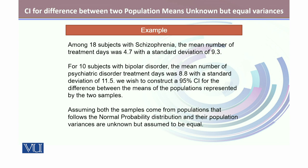They had two groups. The first group had 18 subjects with schizophrenia, and the mean number of treatment days was 4.7 with a standard deviation of 9.3. For the second group, they had 10 subjects with bipolar disorder, and the mean number of psychiatric disorder treatment days was 8.8 with a standard deviation of 11.5 days.